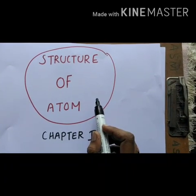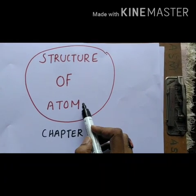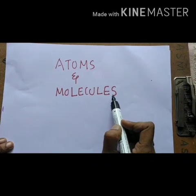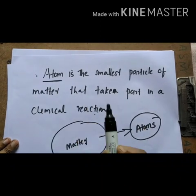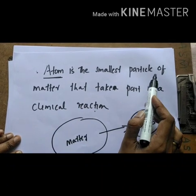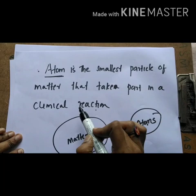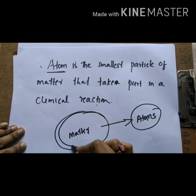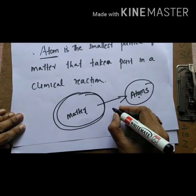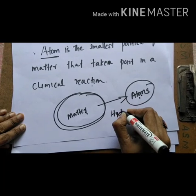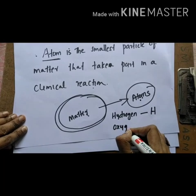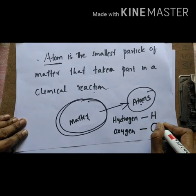We are going to start our new chapter, Chapter 1: Structure of Atom. The first topic of this chapter is Atoms and Molecules. Let us see what is an atom. The definition of atom is: atom is the smallest particle of matter that takes part in a chemical reaction. That means everything around us is made up of atoms. Some examples of atoms are Hydrogen, represented by the symbol H, and Oxygen, represented by the symbol O.